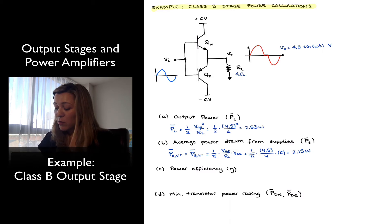If I want the average power drawn from both supplies over an entire cycle, P-s average will be equal to twice that, 2 times 2.15, which will be 4.3 watts.